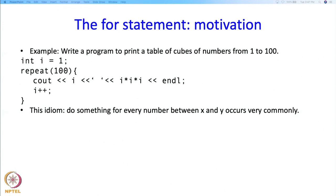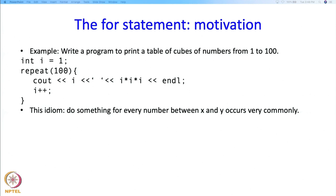Now it so happens that this idiom — doing something for every number between some x and y — occurs very frequently, and therefore C++ provides you a way to describe it very succinctly. That is exactly the for statement. So we want things to go between 1 and 100 and we want that variable to be called i. So we are going to write: for int i equal to 1, i less than 100, and we want the value of i to change by i++.